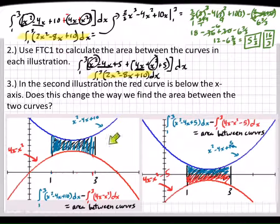So, even though the graphs got shifted down, we still do the same, we follow the same rules. We take the area of the top function, the greater function, and then, or the curve, however you want to call it, and then we subtract the lower curve. And then we get the area between the two spaces in that interval. So, to answer this last question, in the second illustration, the red curve is below the x-axis. Does this change the way we find the area between the two curves? The answer is no.